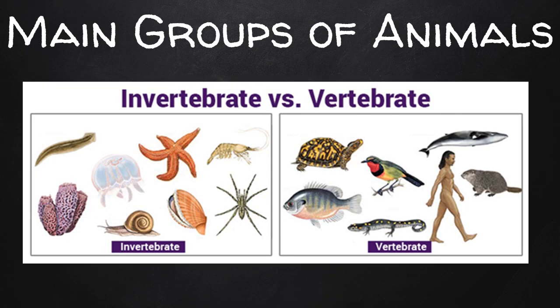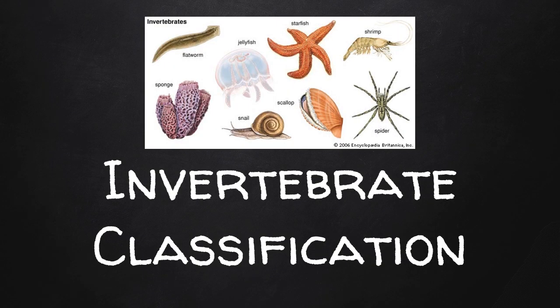There are two main groups of animals: invertebrates and vertebrates. Ninety-seven percent of all species of animals are invertebrates. They have no backbone, and most have an exoskeleton, or a skeleton on the outside of their body. So let's look at some phyla of invertebrates.